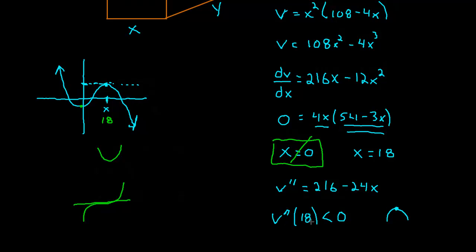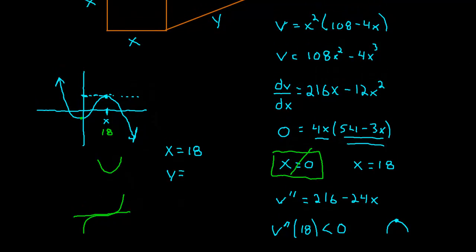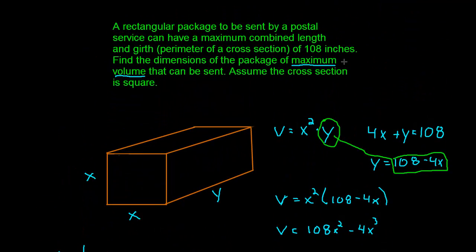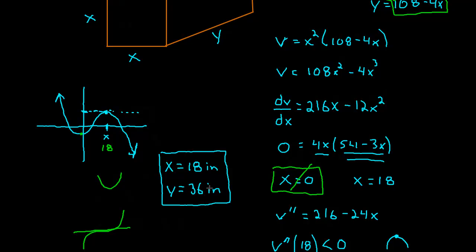The dimensions of our box: x is equal to 18. How are we going to get y? We scroll back up and use our secondary equation. We plug 18 in for x: y = 108 - 4 times 18, which is 36. I guess it is inches. Those are the dimensions of the box that maximize your volume: 18 inches by 18 inches by 36 inches. I hope that made sense to you. We'll see you around.